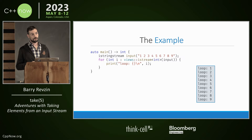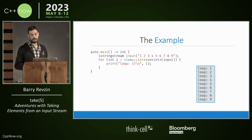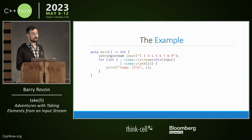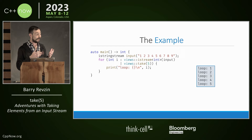This range ends when one of two things happen: either some extraction fails — if my stream had a character that can't convert to an int — or when the stream just runs out. The nice thing about ranges is that they compose. I can take my istream_view and compose it with take_view, using normal function syntax or the pipe syntax, which gives a nice left-to-right ordering. When you do take five, you of course get one of the all-time great jazz standards — Dave Brubeck's a genius. What you get here is the first five numbers.